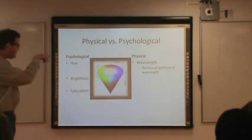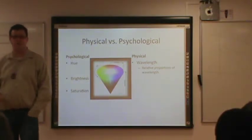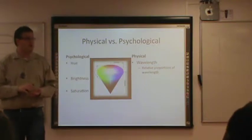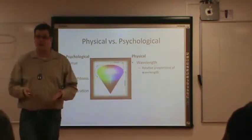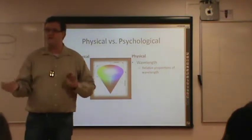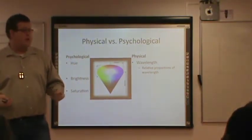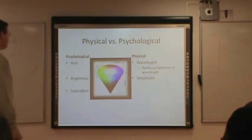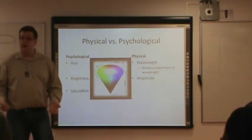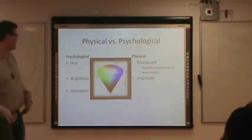Brightness refers to how intense the stimulus is, and the physical property of the wave related to intensity is amplitude. Things with higher amplitude are brighter; things with lower amplitude are dimmer.